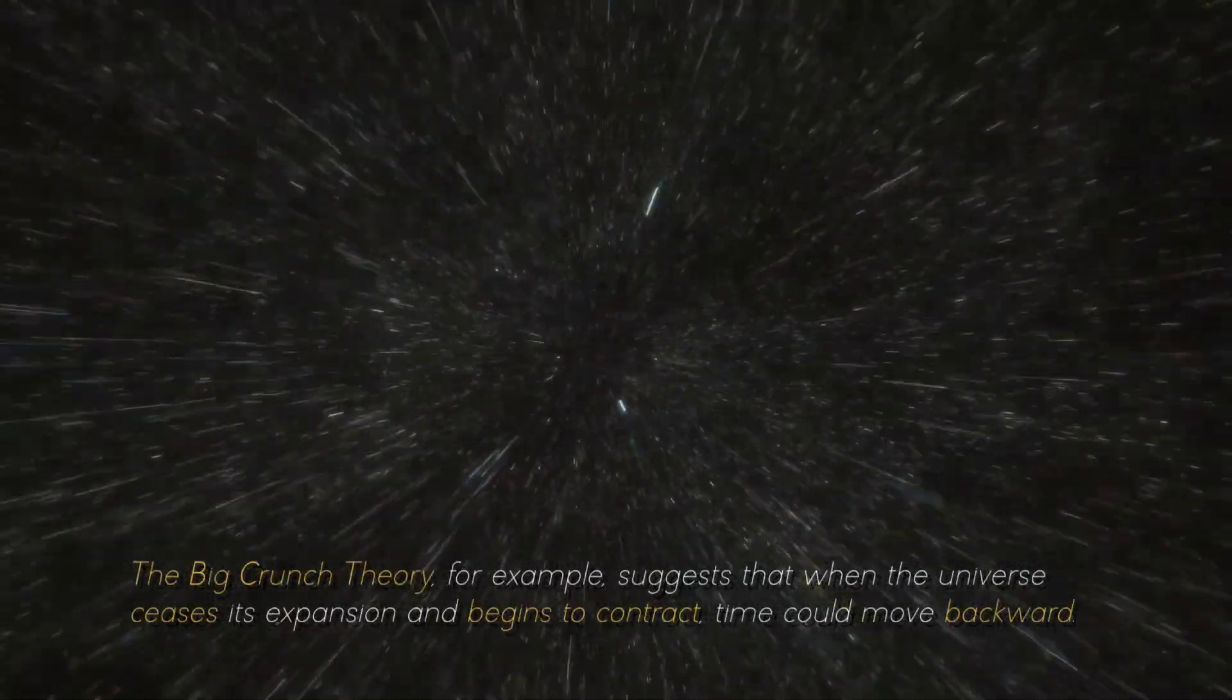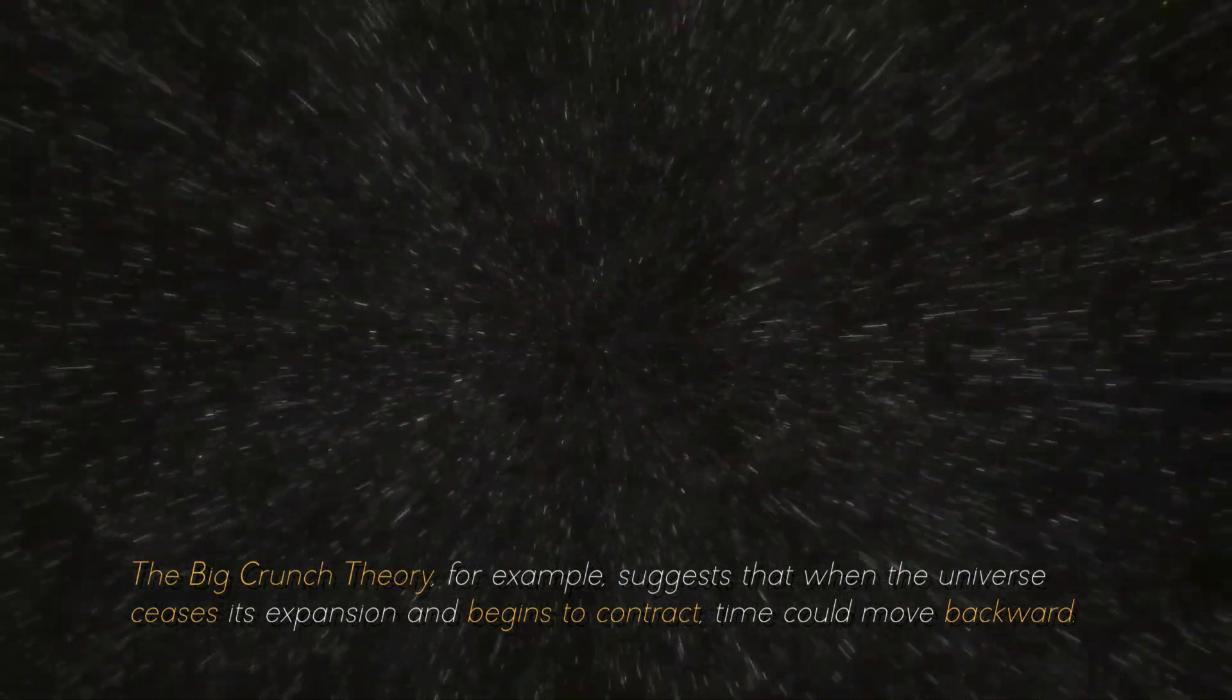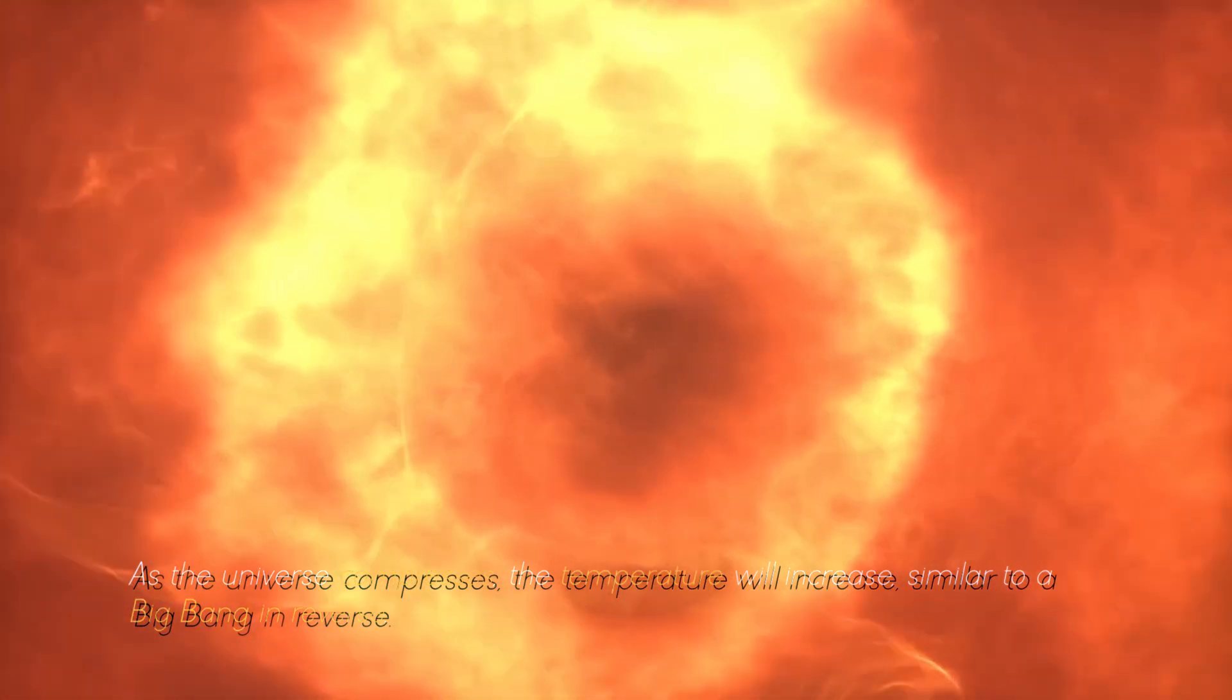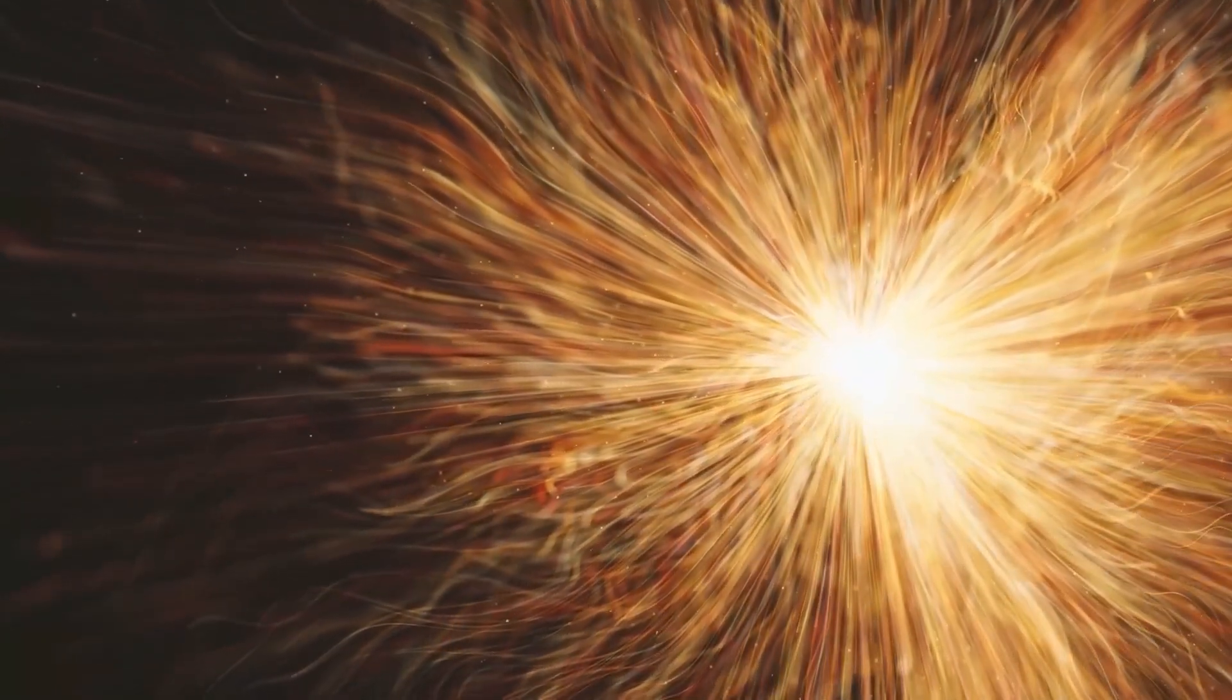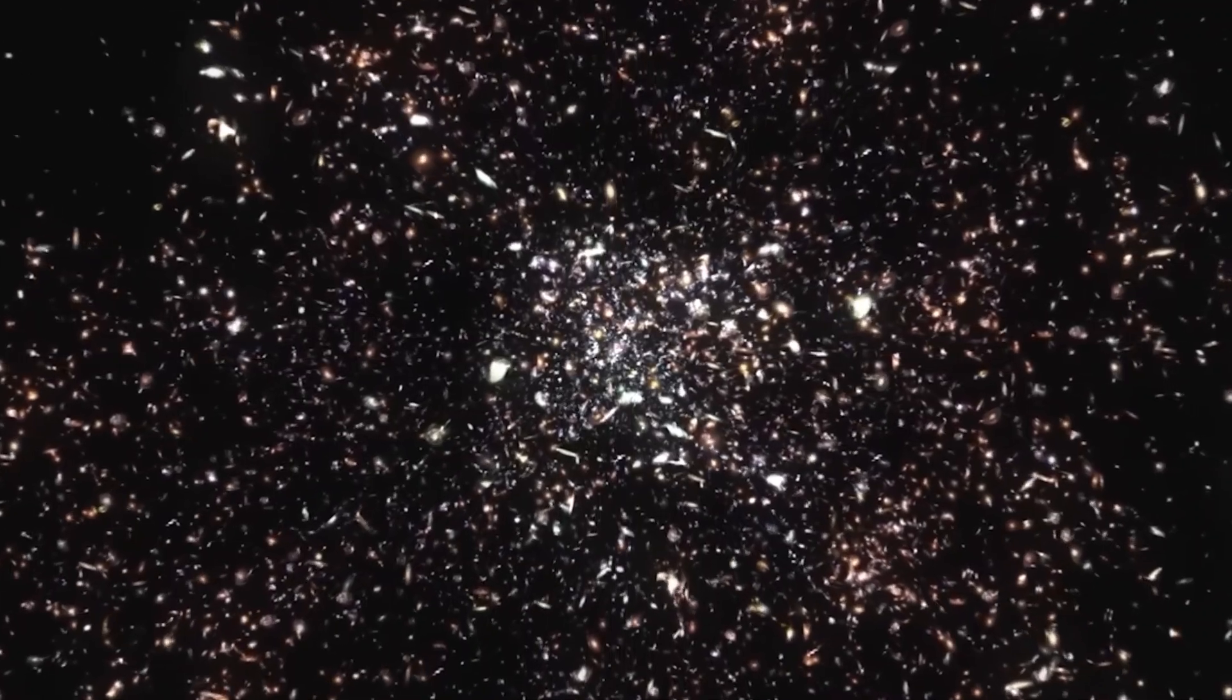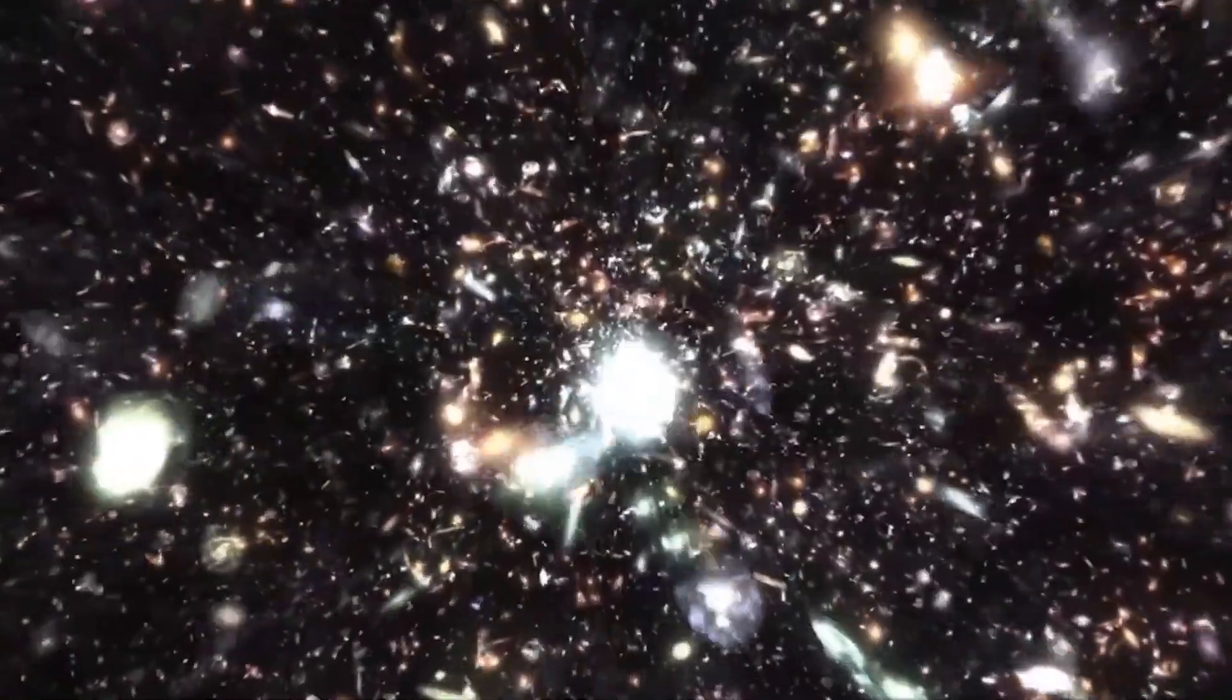The Big Crunch theory, for example, suggests that when the universe ceases its expansion and begins to contract, time could move backward. As the universe compresses, the temperature will increase, similar to a Big Bang in reverse. Now, what happens after the Big Crunch is a question that has puzzled many of us. Several theories raise the possibility that a new universe could arise from another Big Bang, while others suggest that our universe could reappear at another point, as if it were a cosmic bubble. There are even hypotheses that this cycle could repeat itself over and over again, giving rise to countless universes.